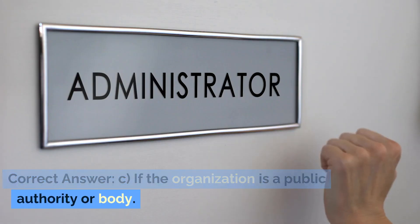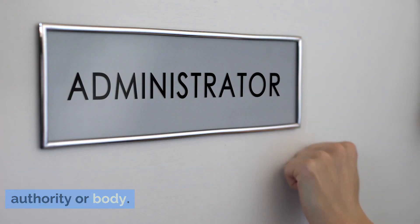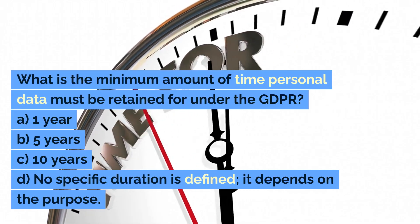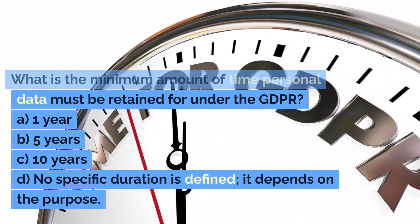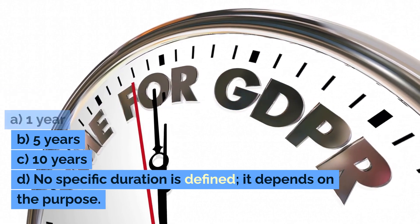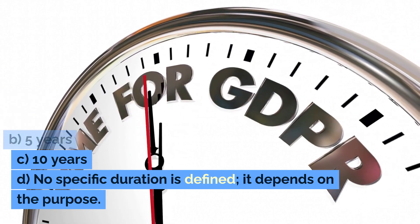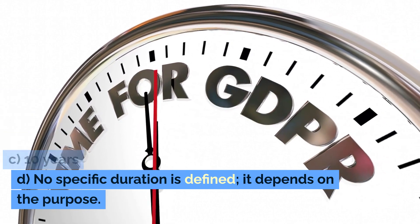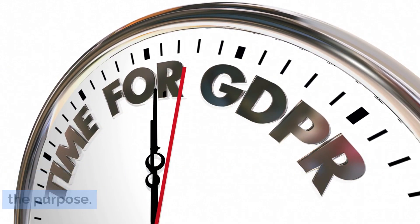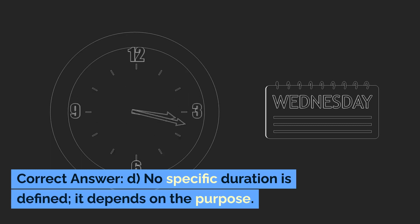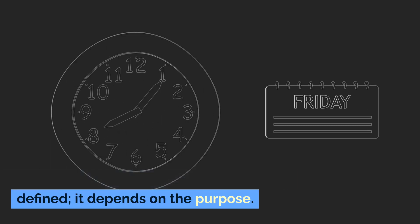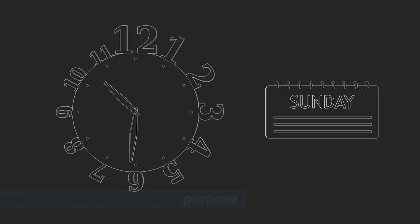What is the minimum amount of time personal data must be retained for under the GDPR? A. 1 year. B. 5 years. C. 10 years. D. No specific duration is defined — it depends on the purpose. Correct answer: D. No specific duration is defined. It depends on the purpose.